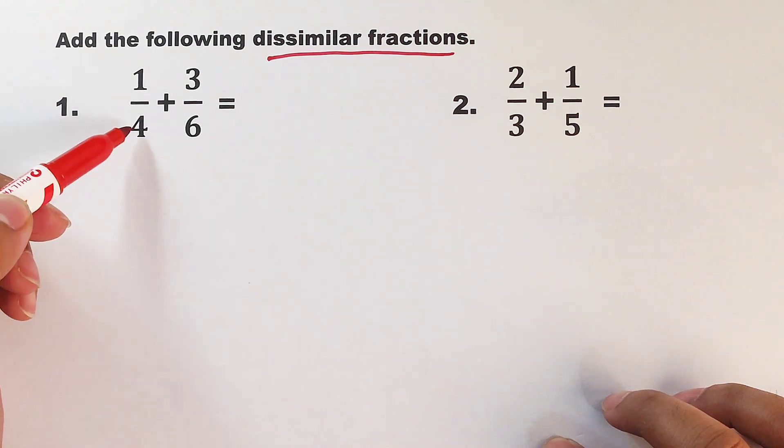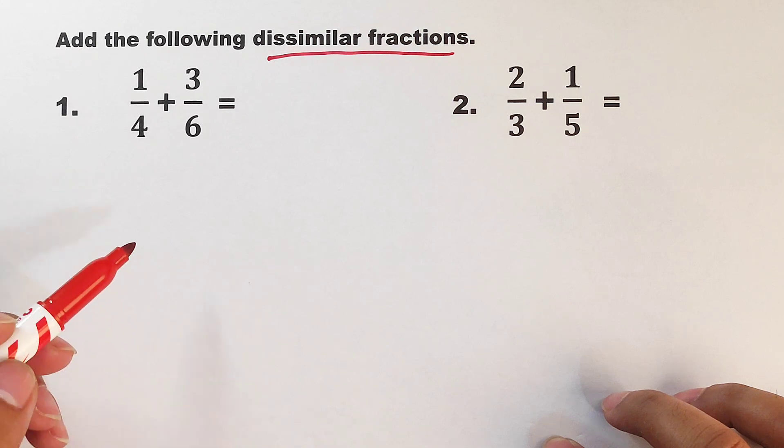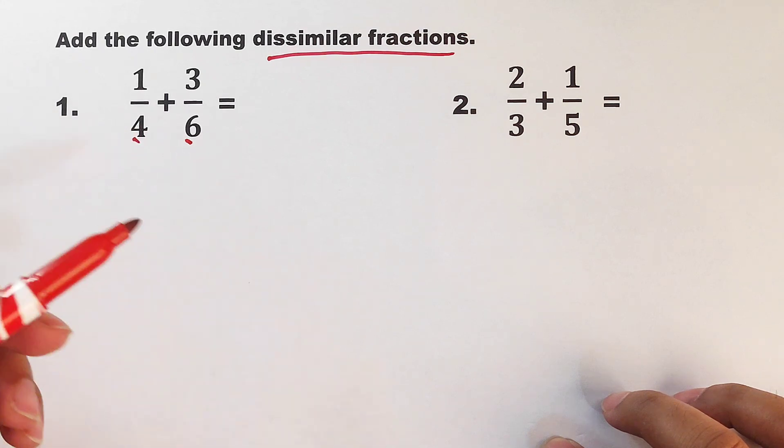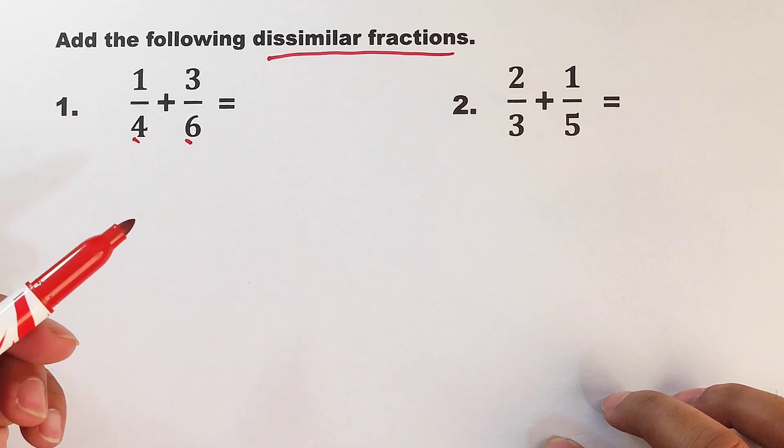We have 1 over 4 plus 3 over 6. The first thing we need to do is to figure out how are we going to make these denominators the same. As you can see, it's much easier to add fractions with similar denominators or with the same denominators.